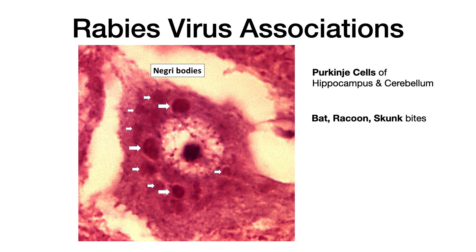As far as the animal bite is concerned, you want to associate the rabies virus with the bite of a bat, a raccoon, or a skunk. If you get an animal bite question on your exam, it's probably going to be one of a few different infections — rabies virus usually being associated with bats, raccoons, and skunks.